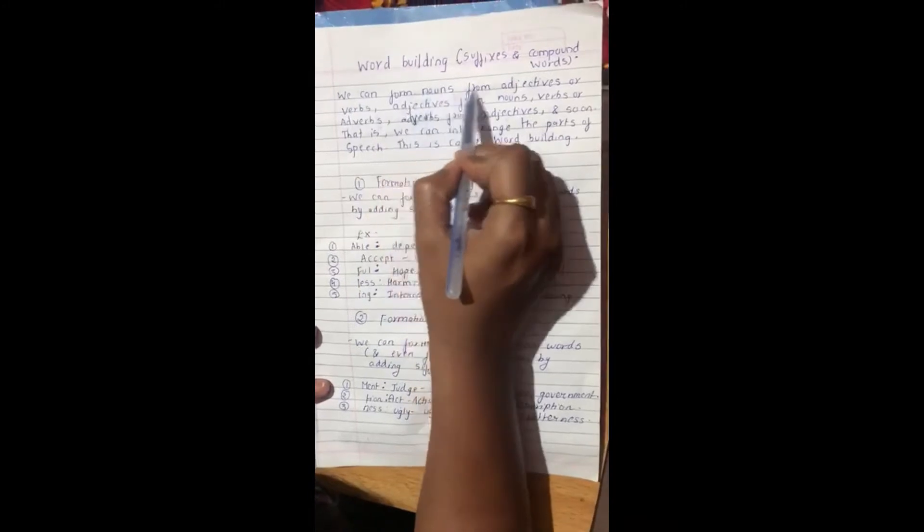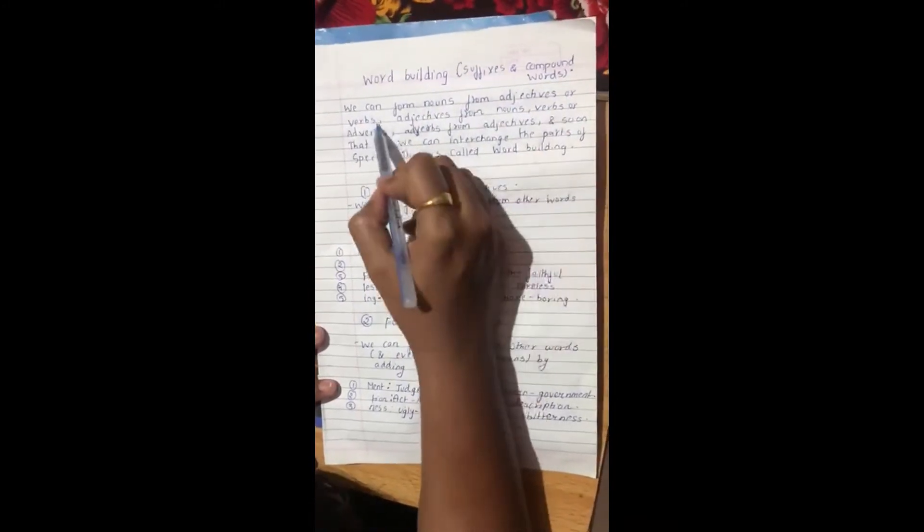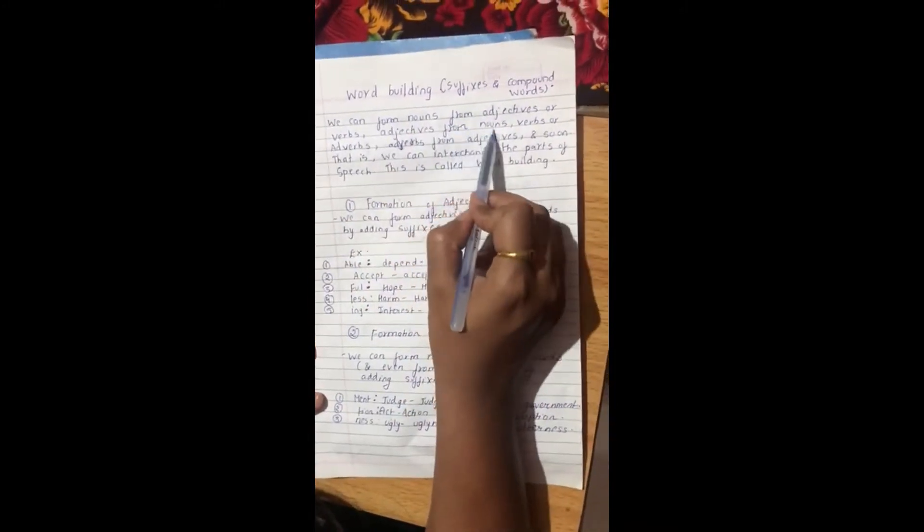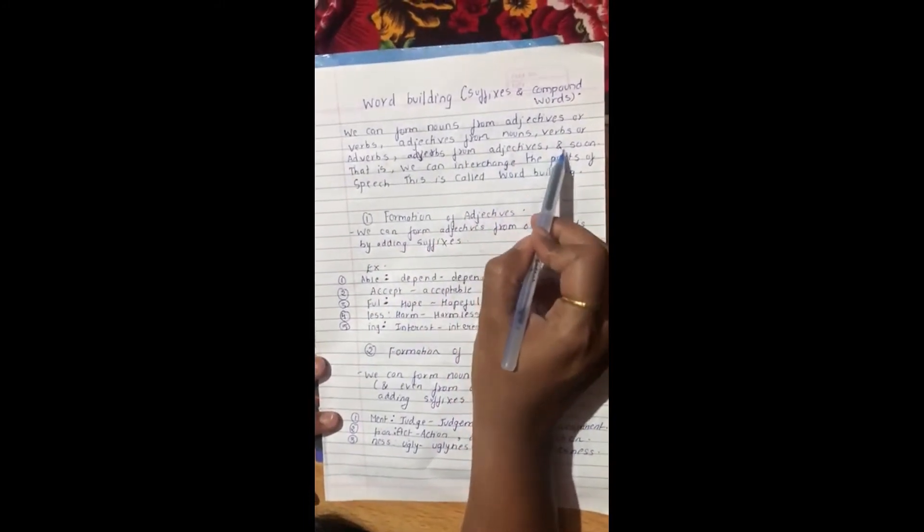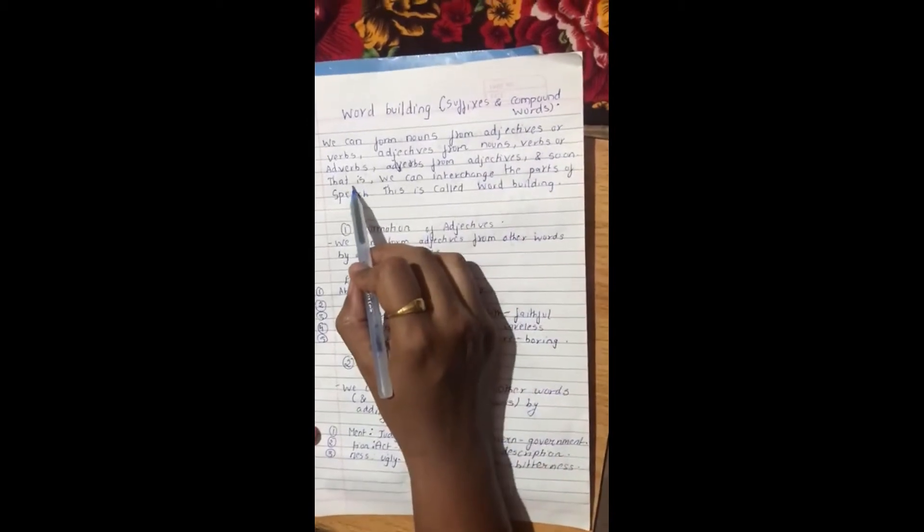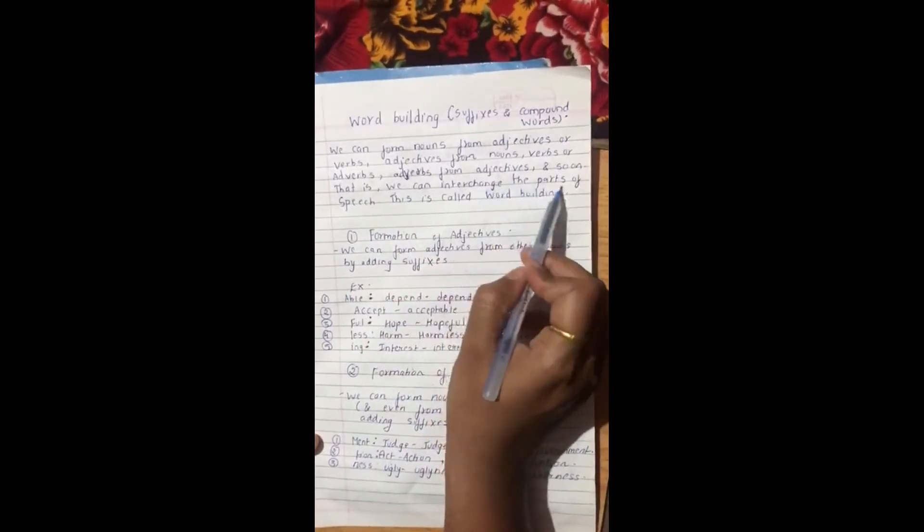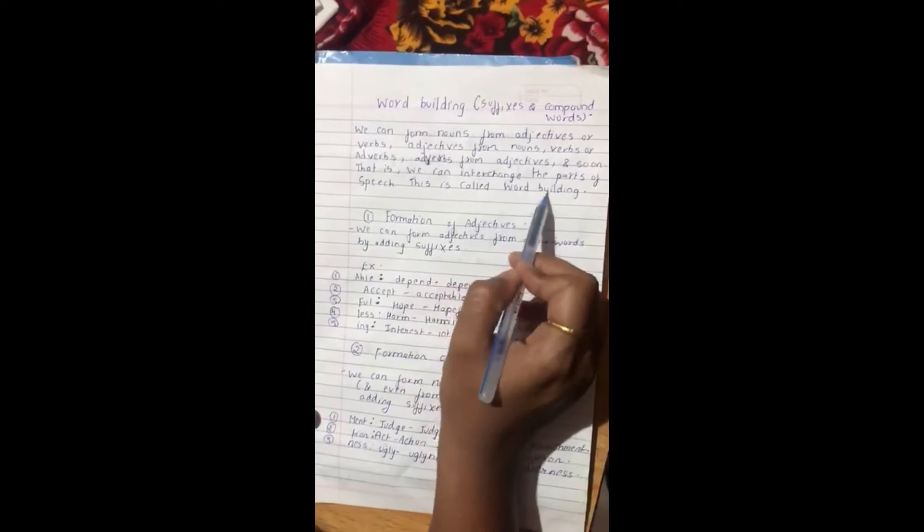We can form nouns from adjectives or verbs, adjectives from nouns, verbs or adverbs, and adverbs from adjectives and so on. That is, we can interchange the parts of speech. This is called word building.